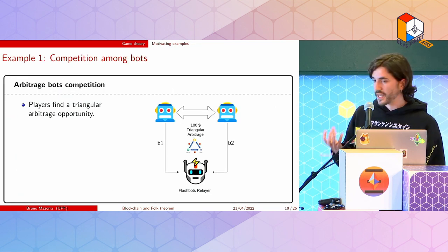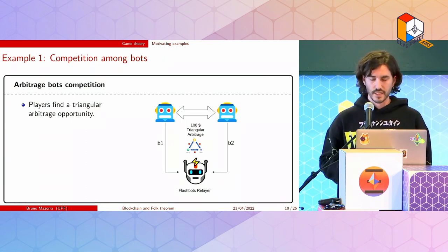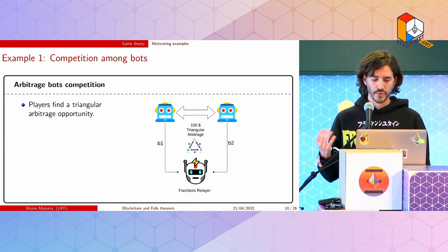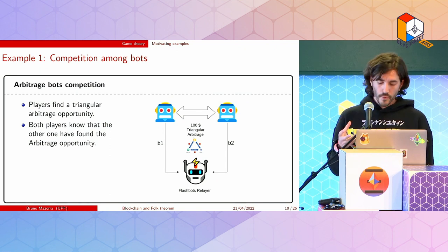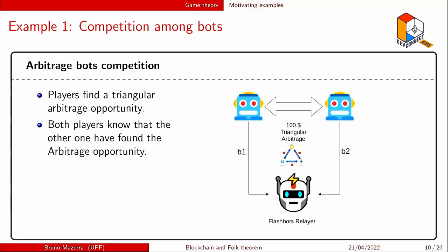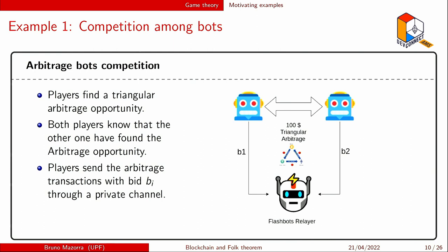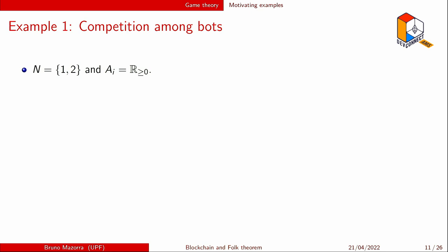Let's see a real case scenario that arises naturally in blockchain technology: two bots competing for an arbitrage opportunity. Say there are two bots that found exactly the same arbitrage opportunity worth 100. Moreover, both players know the other player found the same opportunity. Through flashbots — a first-price auction — they each send a transaction to extract this opportunity, paying some cost through a private channel so they don't see each other's bids. The transaction with the highest bid wins.